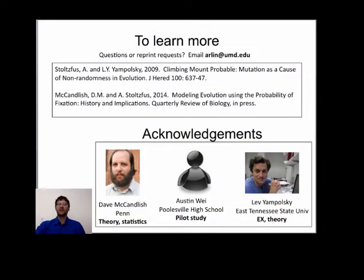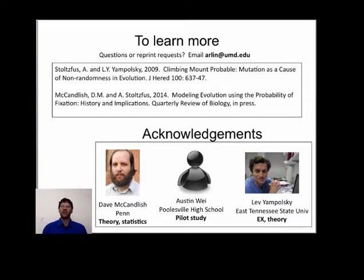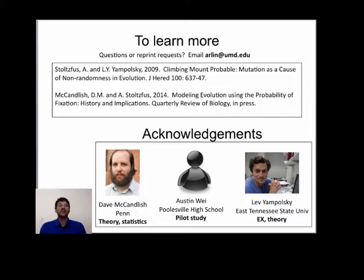I hope this way of thinking about dual causes of direction will seem obvious. But what makes it so interesting is that you won't find it in your evolution textbook, because it played no role in 19th or 20th century evolutionary thought. To learn more, including the population genetics theory behind this way of thinking, check out these articles here.